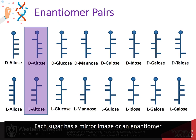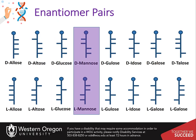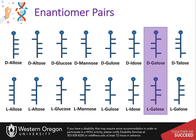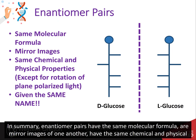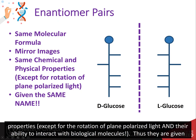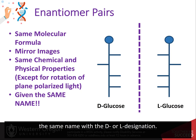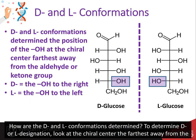Each sugar has a mirror image or an enantiomer. In summary, enantiomer pairs have the same molecular formula, are mirror images of one another, and have the same chemical or physical properties — except for the rotation of plane polarized light and their ability to interact with biological molecules. Thus, they are given the same name with the D or L designation.